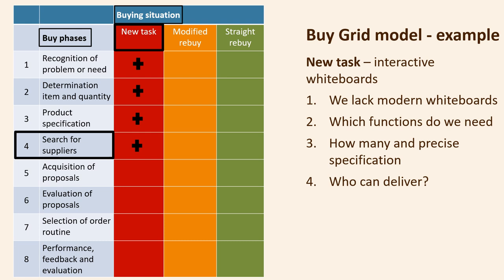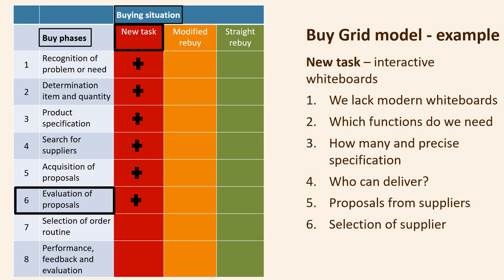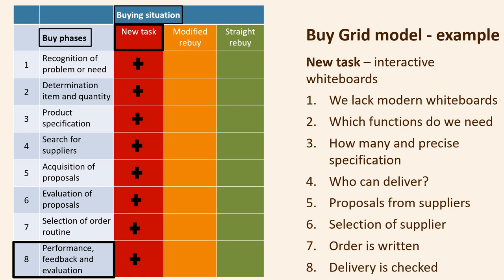The buyer prepares a product specification in phase three based on the input from phase two, and estimates how many boards are needed. In phase four, the team searches for potential suppliers who can supply these boards. In phase five, the buyer receives proposals from the selected suppliers and analyses the various offers. In phase six, the proposals are evaluated and the final supplier is selected. In phase seven, the order is submitted based on the best terms negotiated in phase six. In phase eight, the order is delivered and checked against the contract.